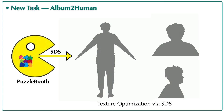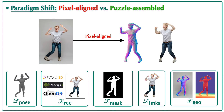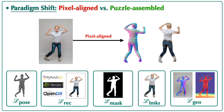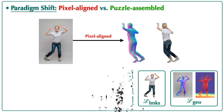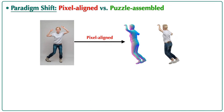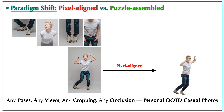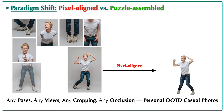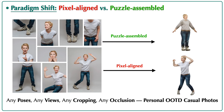After around 10,000 optimization steps, the intrinsic geometric details and texture patterns are recovered. Unlike previous pixel-aligned approaches, Puzzle Avatar bypasses all these estimators and reprojection losses, making it as simple as possible. The 3D avatars can be constructed from unstructured data in any poses, from any views, with any cropping, under any occlusions, without bells and whistles.